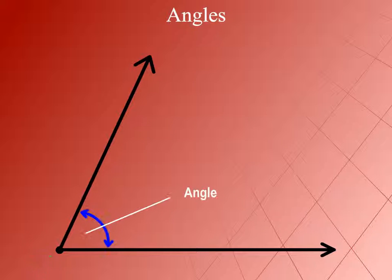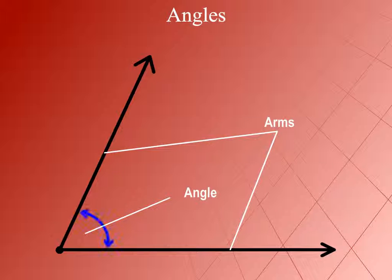So an angle is a figure formed by two rays with the same initial point. The two rays forming the angle are called arms or sides of the angle, and the common initial point is called the vertex of the angle.